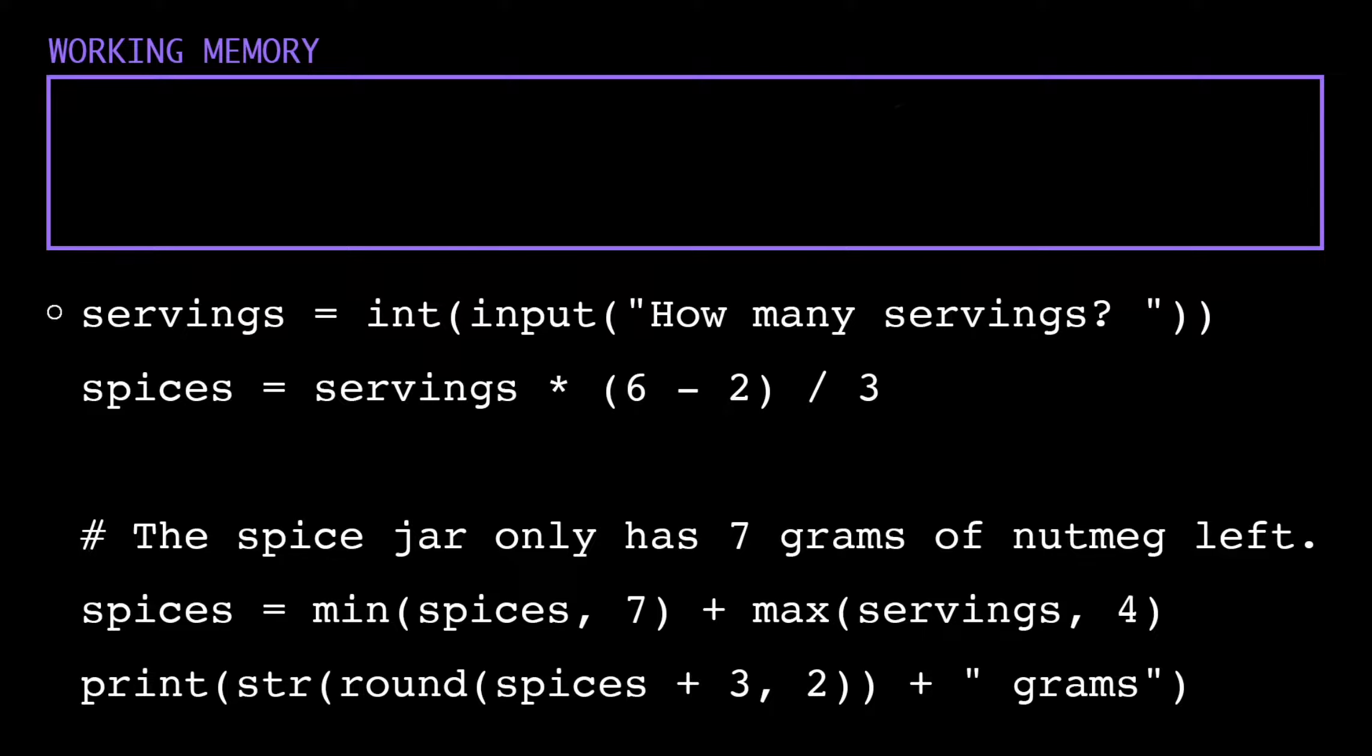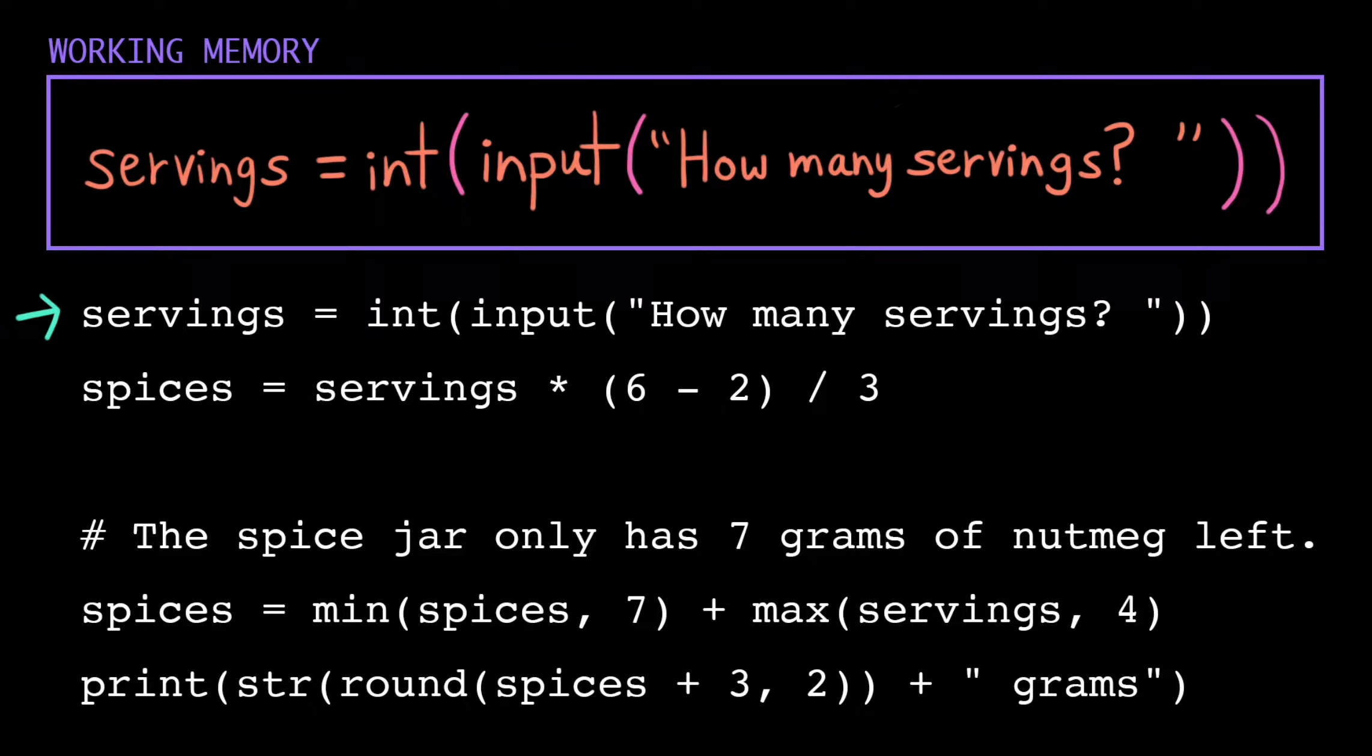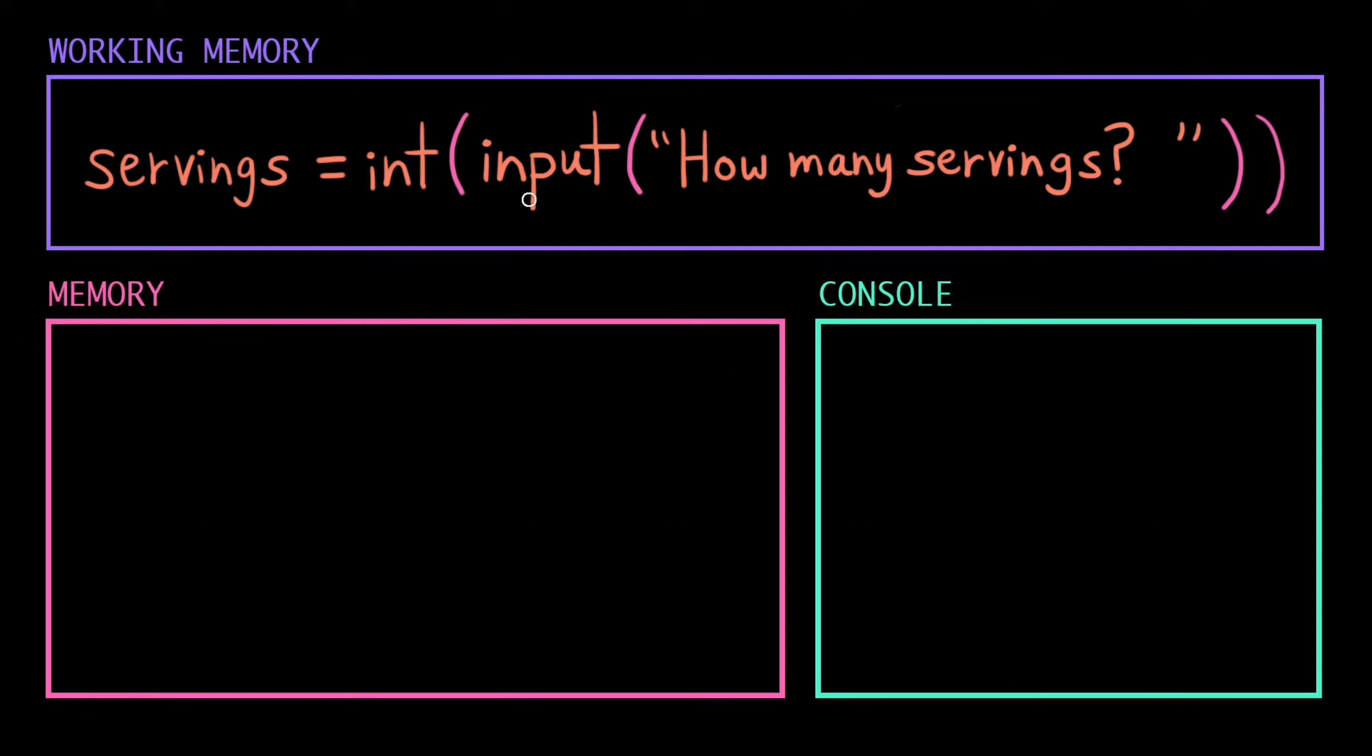As always, the first thing the computer does when we run the program is load the first instruction into its working memory. When it sees an instruction like this where there's nested function calls, it's going to search for the innermost parentheses first, then it starts evaluating from the inside out.